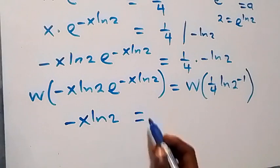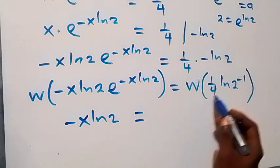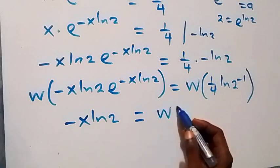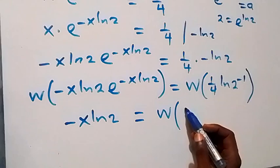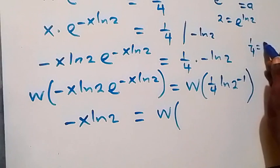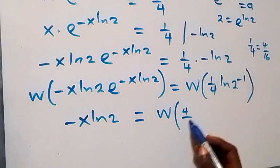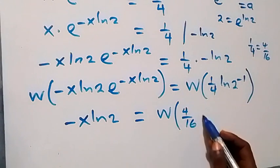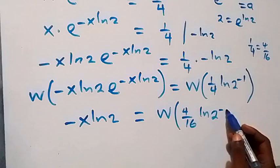Then equals, on this side we can write W of 1 over 4 times (minus ln2). The equivalent fraction: we can write 1 over 4 as 4 over 16, so here we have W(4 over 16 · ln2 raised to power minus 1).